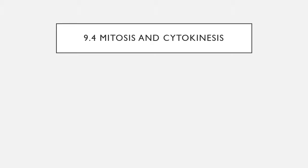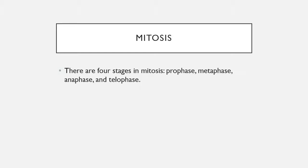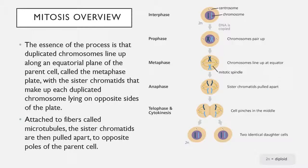In section 9.4, we'll talk in more detail about what exactly happens in mitosis and cytokinesis. There are four stages of mitosis: prophase, metaphase, anaphase, and telophase. In mitosis, the DNA moves to opposite sides of the cell and the cell prepares to split into two. During this process, the DNA duplicates and you have two copies of each chromosome.